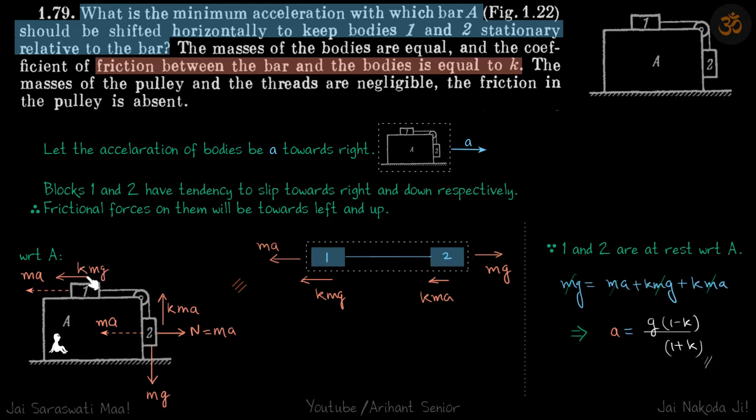And on first block also frictional force is maximum, so that is KMG. So the forces on one are KMG and MA, with respect to the bigger block. And on two, forces are KMA upwards and MG downwards. So now we can equate the system to include both one and two within the system, so we don't need to bother about tension, and the direction of the forces will just straighten them like this.